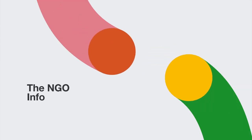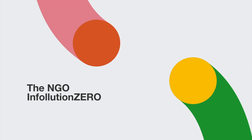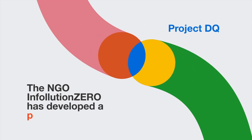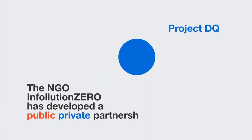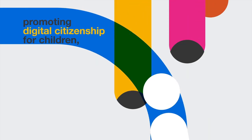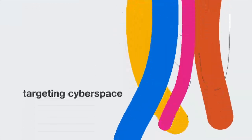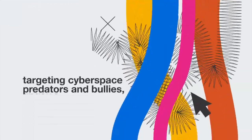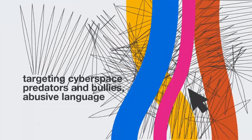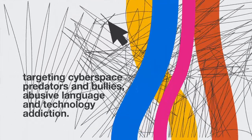Third, the NGO Infolution Zero has developed a public-private partnership promoting digital citizenship for children, youth and parents, targeting cyberspace predators and bullies, abuse of language and technology addiction.